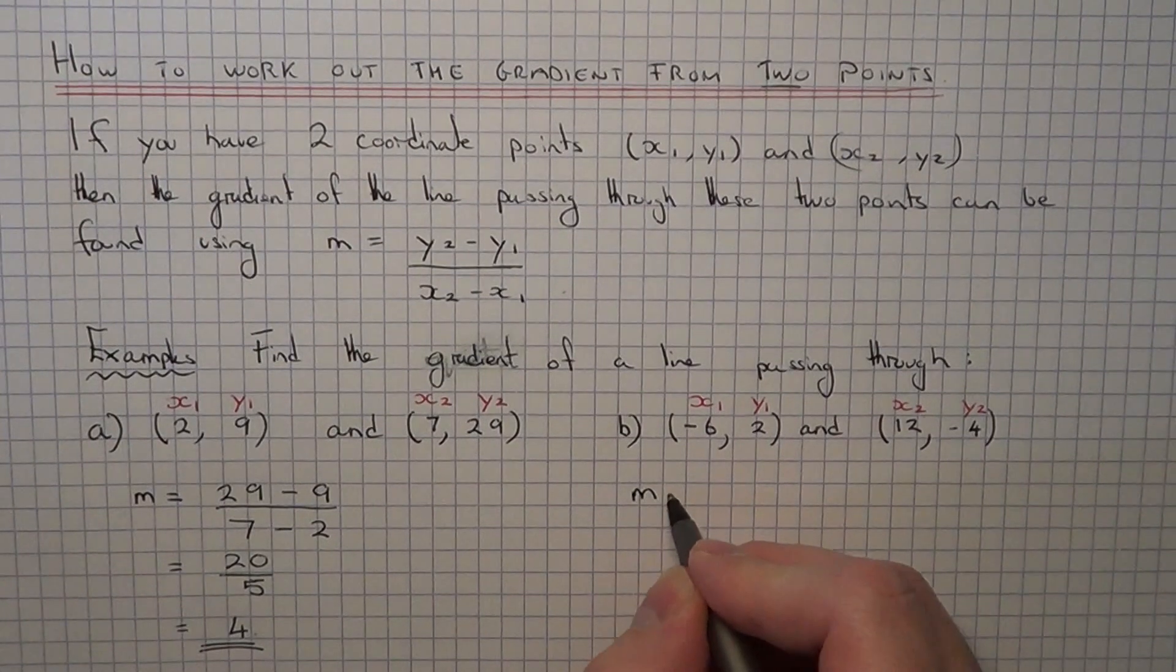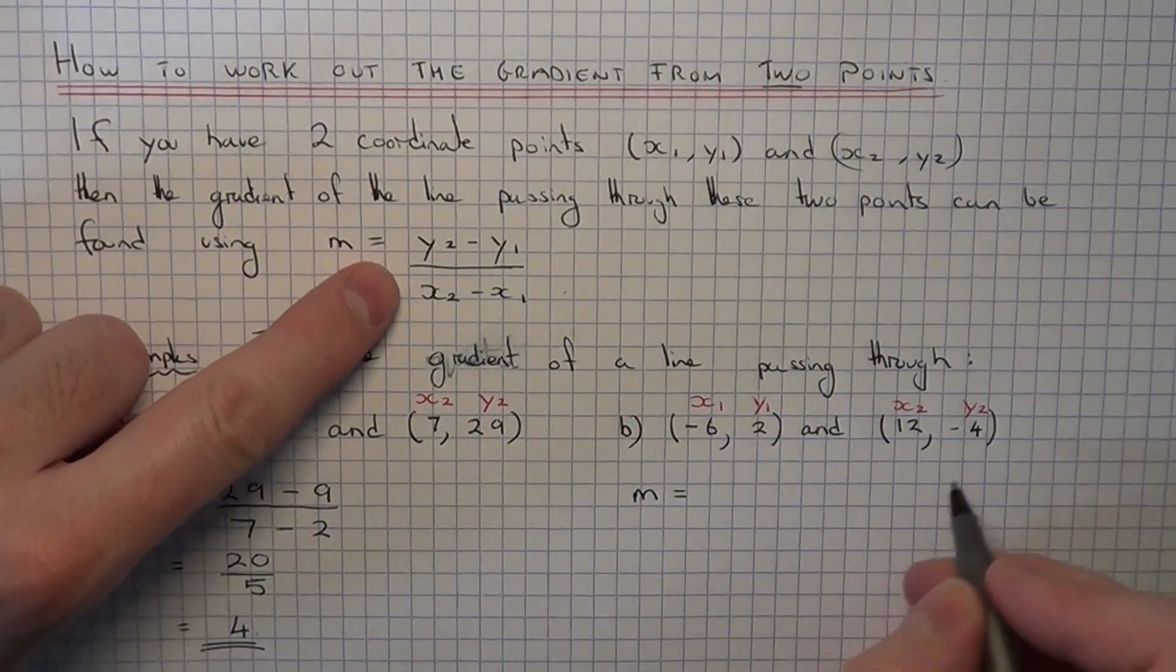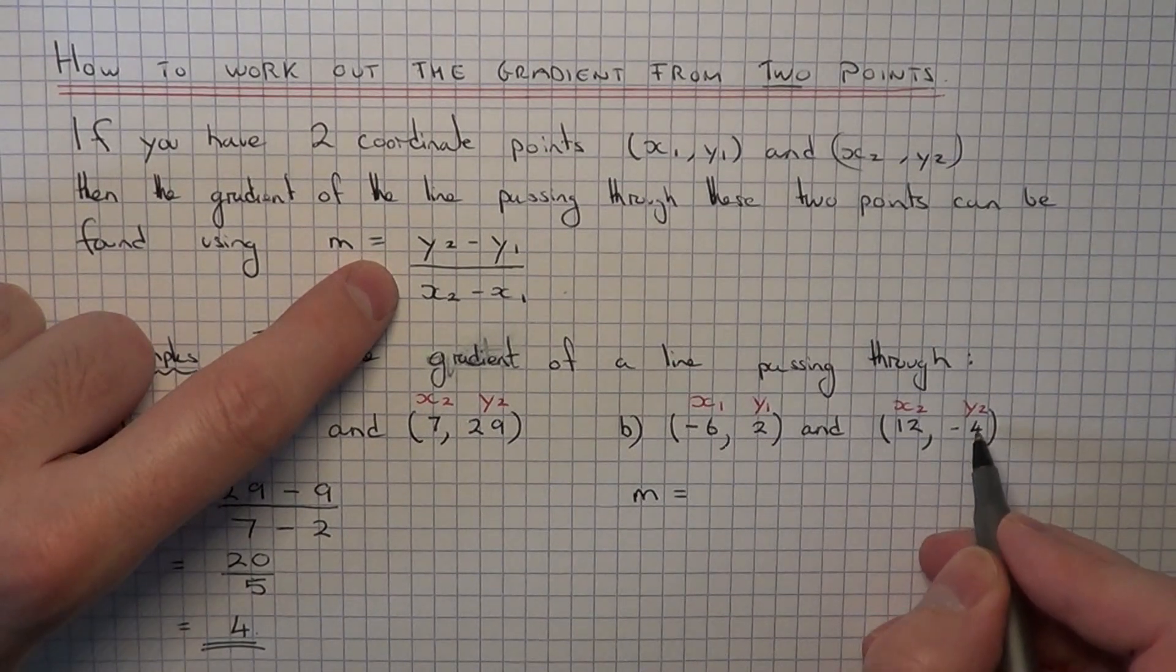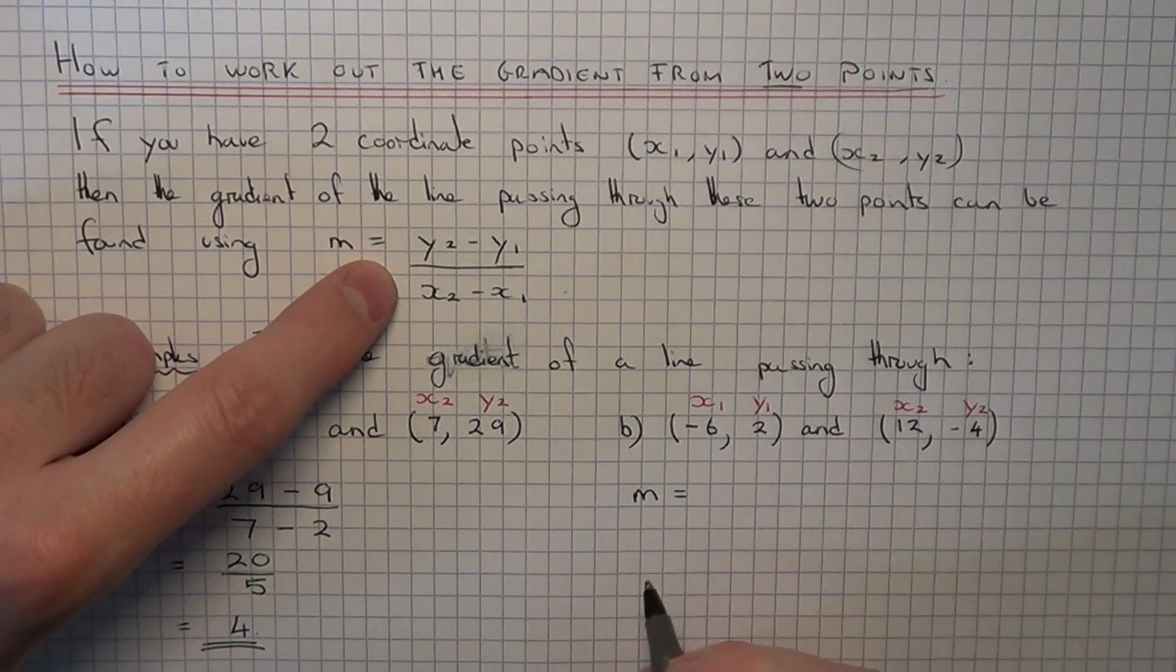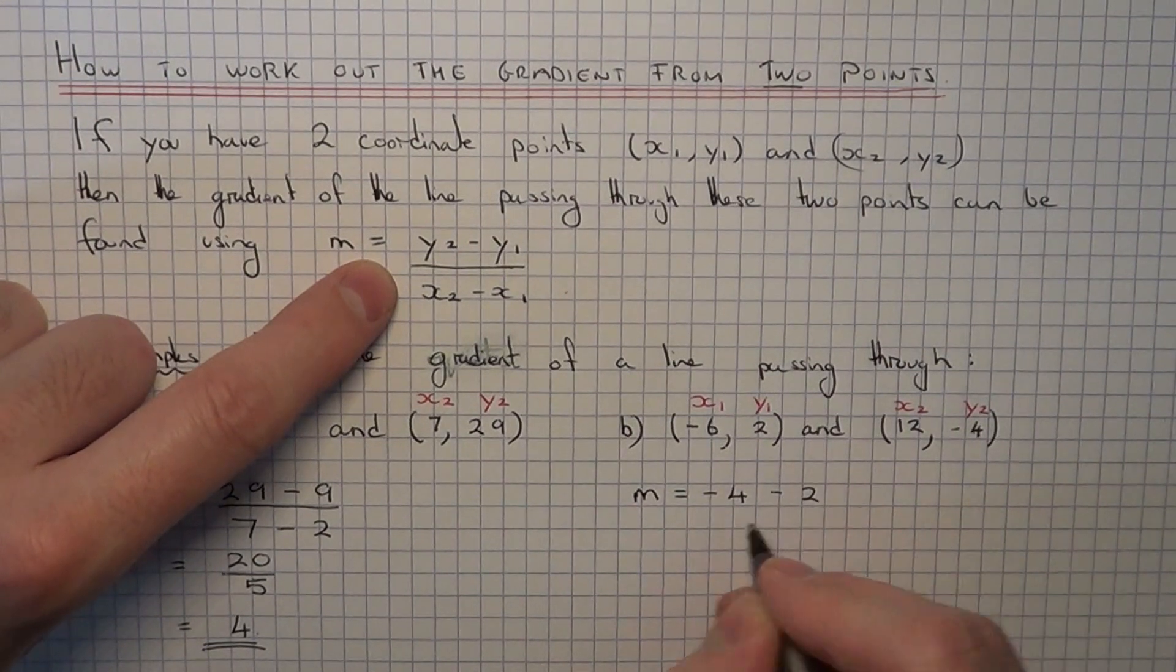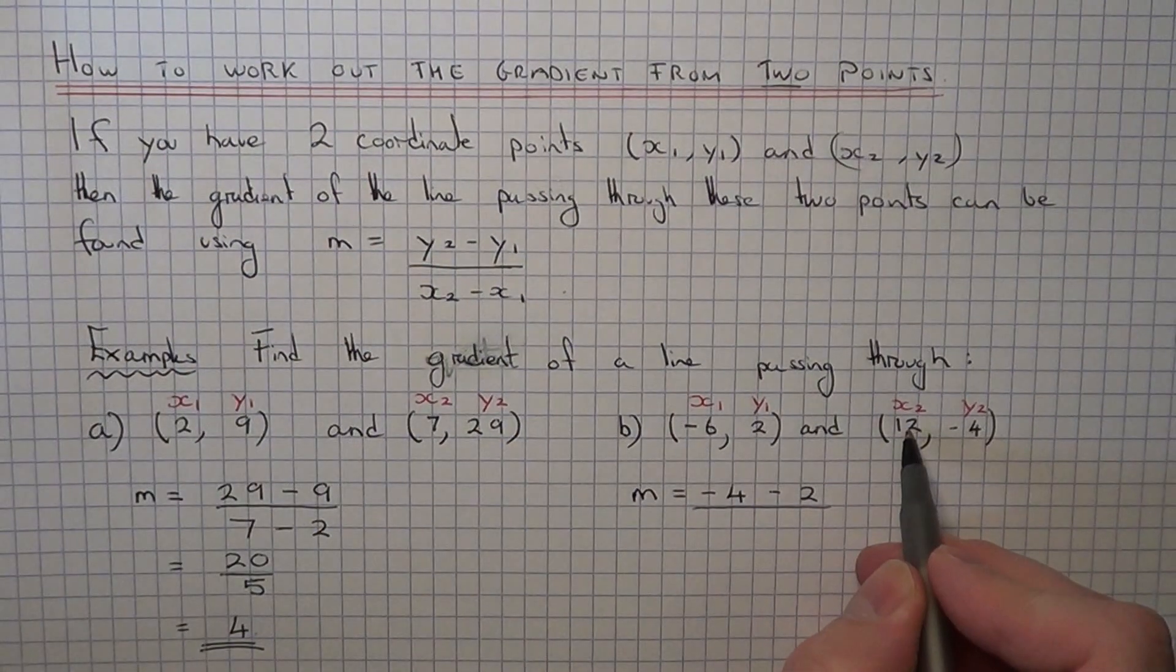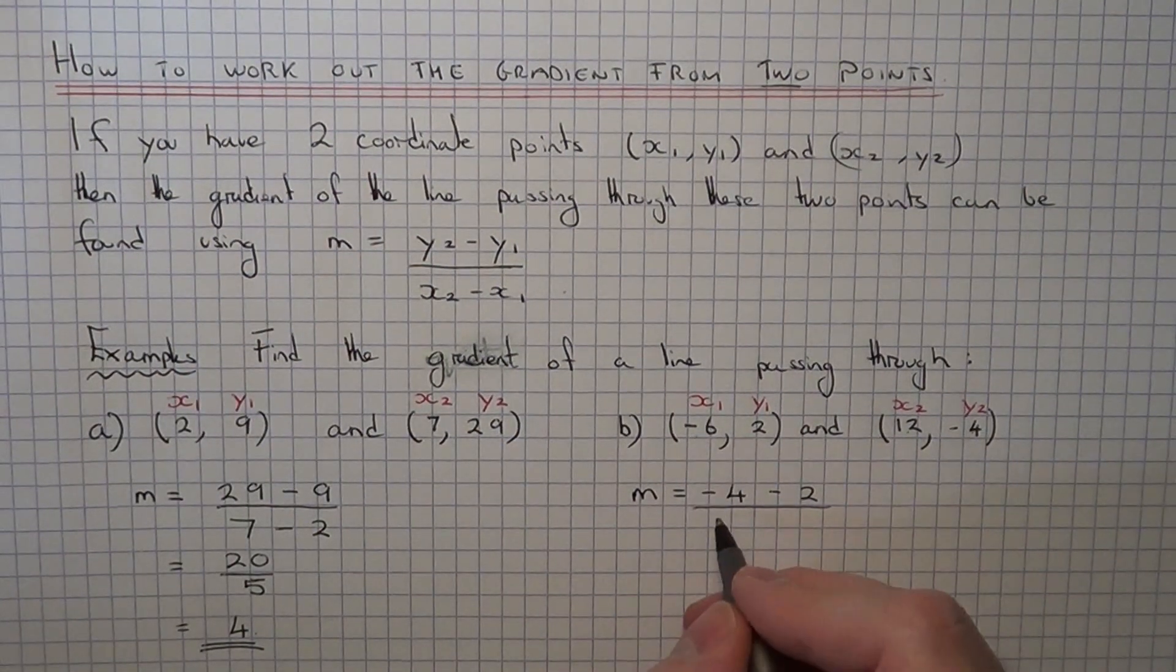So be very careful now when you substitute the numbers into the formula. So on the top of the fraction it's going to be y2 minus y1, so it's minus 4 take away 2. And on the bottom of the fraction we've got 12 take away minus 6.